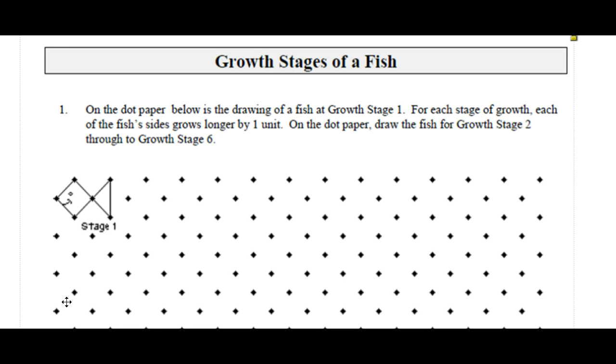On the dot paper below is the drawing of a fish at growth stage 1. For each stage of growth, each of the fish's sides grows longer by one unit. Draw the fish for growth stage 2 through growth stage 6.